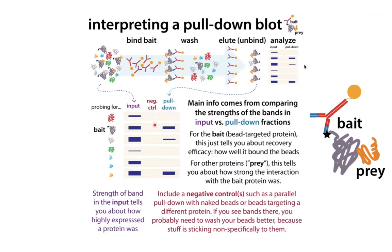It's also important to have a negative control. This might be a pulldown with naked beads — beads without antibody bound — or with beads with an antibody for something that you know is not in the mixture, such as something targeting a different protein. This is important to show that your antibody is actually specific and your washes are sufficient. So you have your input, your negative control, and then your pulldown — sometimes labeled IP — which is the stuff pulled down when you isolated the bait, including whatever prey it was bound to.